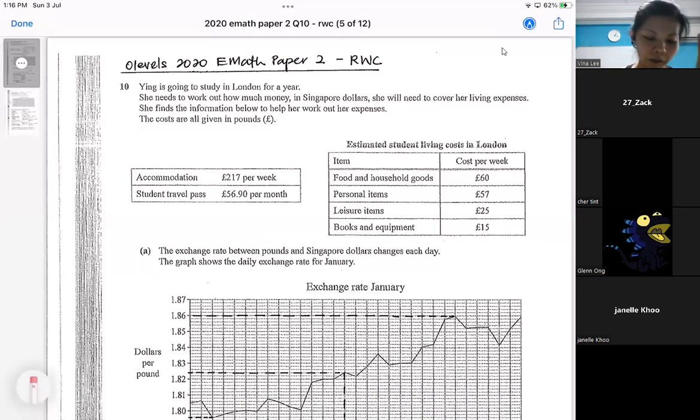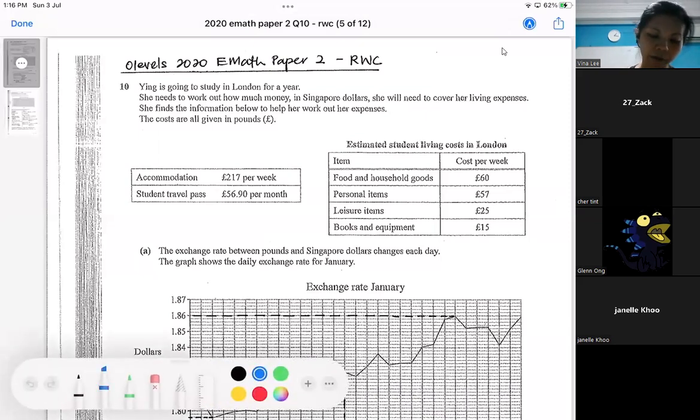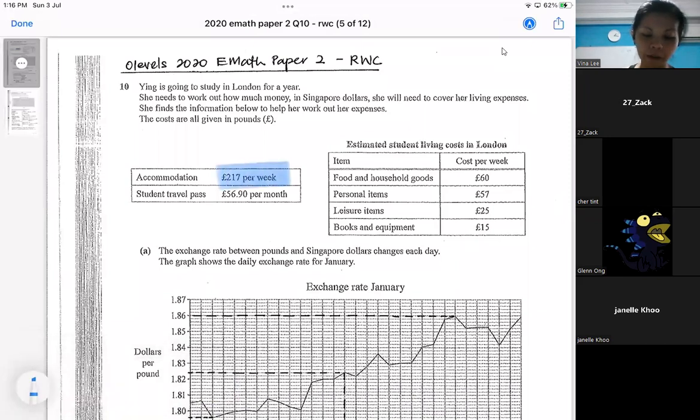So there's accommodation. Take note, the information here is like £217 per week. The student pass is per month. And the household, like this estimated living costs, is per week. So they are dealing with either per week or per month. Make sure you notice that. Eventually, you're supposed to work out for a year.